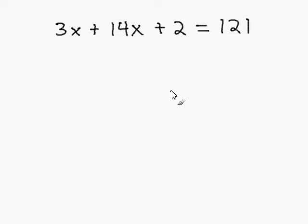Solving equations by combining like terms. In this problem, to solve for x, I must combine the like terms in order to get one instance of x. So, I'm going to combine the like terms of 3x and 14x.